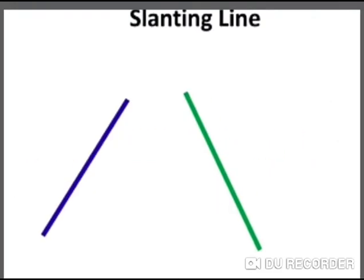You must have seen these lines in your earlier videos. Do you know these lines? Yes, these are slanting lines. We can say lines are slanting if they look like a slope and go both up and down and across too.